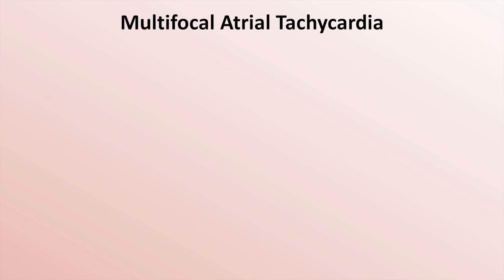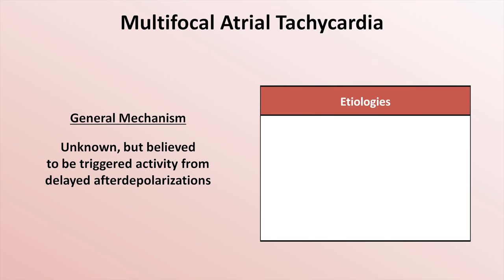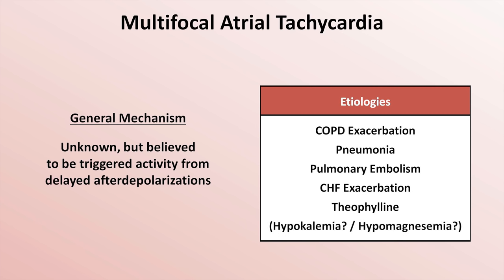The next rhythm is multifocal atrial tachycardia, abbreviated MAT, and is the least common of the six categories. The general mechanism is unknown but believed to be triggered activity — knowledge of this concept is not necessary to diagnose the rhythm. MAT is seen in two general situations: acute pulmonary disease such as a COPD exacerbation, pneumonia, or PE; and CHF exacerbation. Multiple studies suggest a correlation with theophylline use. Hypokalemia and hypomagnesemia are also believed to contribute, but this remains unproven.